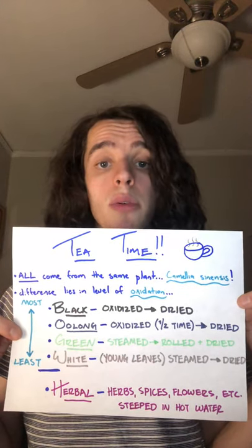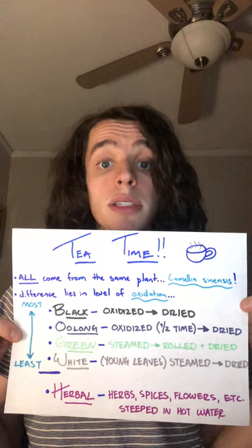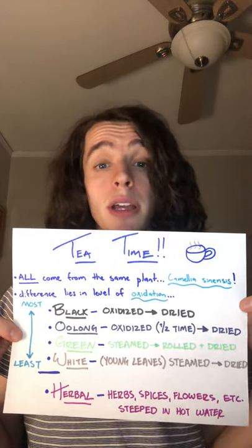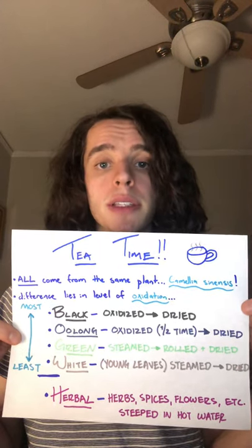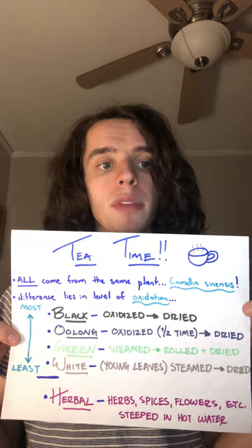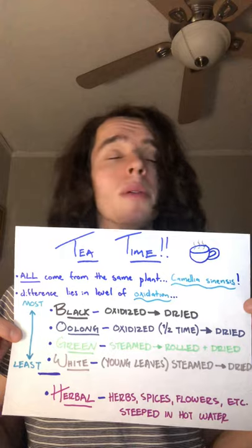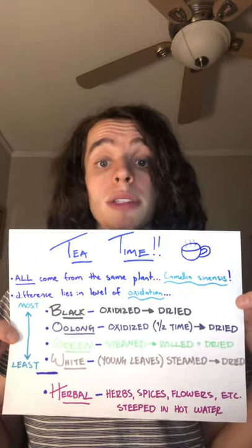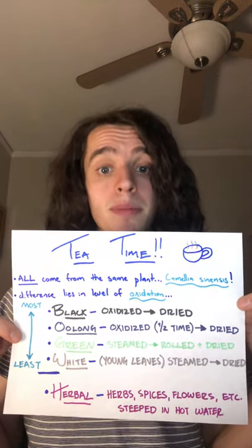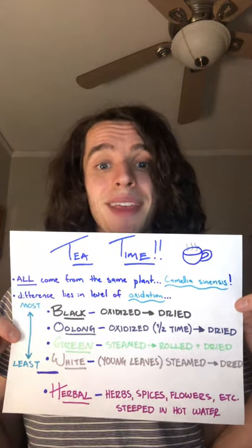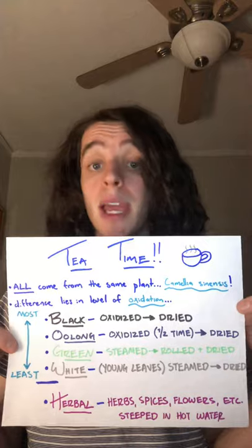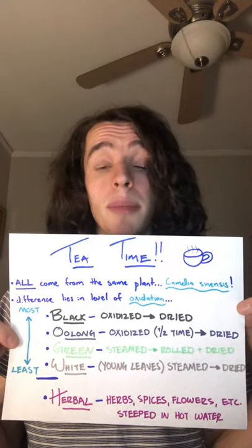Regarding how the tea plant itself actually looks, it is an evergreen shrub, or like a small tree, that produces these flowers. The flowers are sort of a yellowy-white color — they're very beautiful. I looked up some pictures because I was curious and they're really pretty. Anyways, that is a little bit about the tea plant itself.